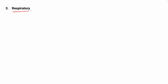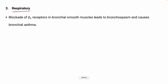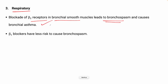The next effect is on the respiratory system. Beta blockers block the beta-2 receptors, causing blockage of bronchial smooth muscle relaxation, which leads to bronchospasm and can precipitate bronchial asthma. Even beta-1 selective blockers can switch to causing bronchospasm.